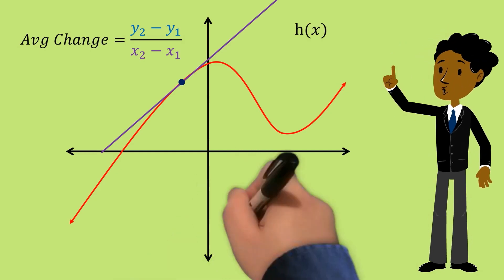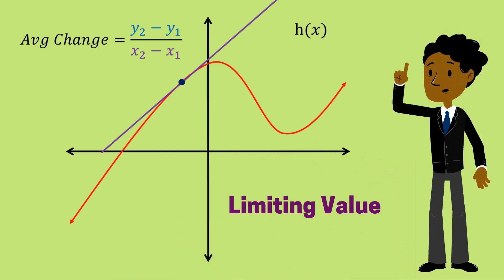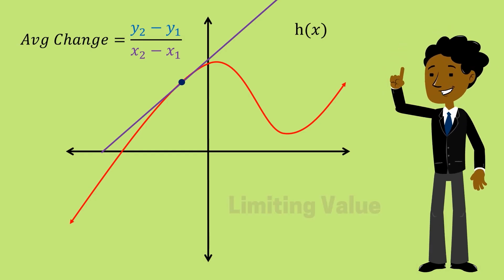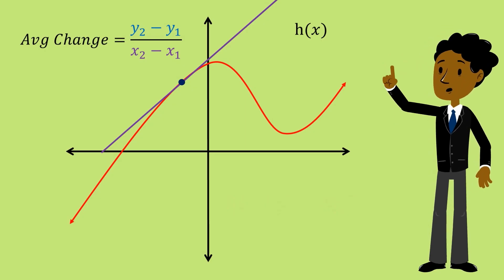This is what we will call our limiting value and it works great as an approximation to the instantaneous change of a function. Let's take a look at a simple example to see this process in action.